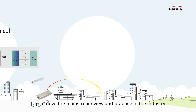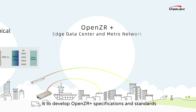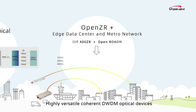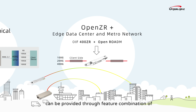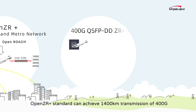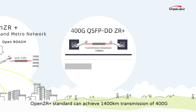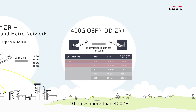Up to now, the mainstream view and practice in the industry is to develop OpenZR Plus specifications and standards. Highly versatile coherent DWDM optical devices can be provided through feature combination of devices in the same form factor. The OpenZR Plus standard can achieve 1,400 km transmission of 400G — 10 times more than 400ZR.